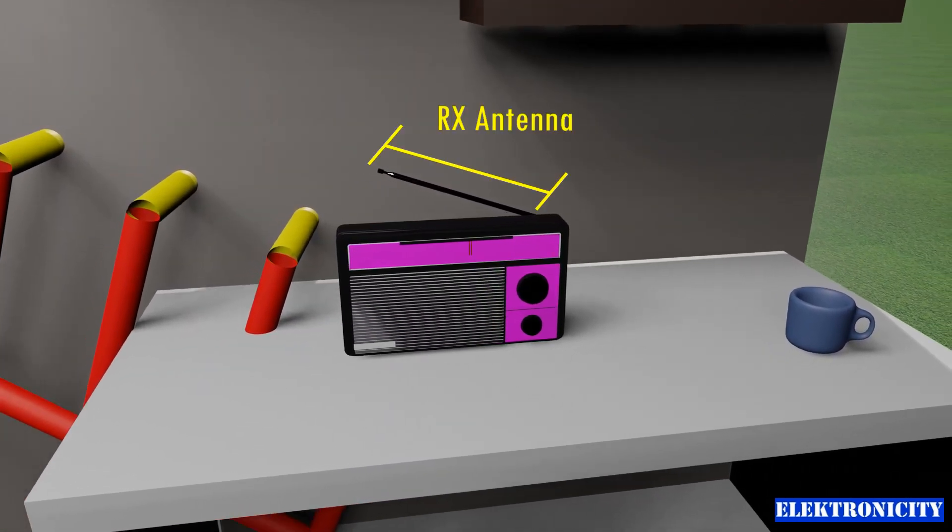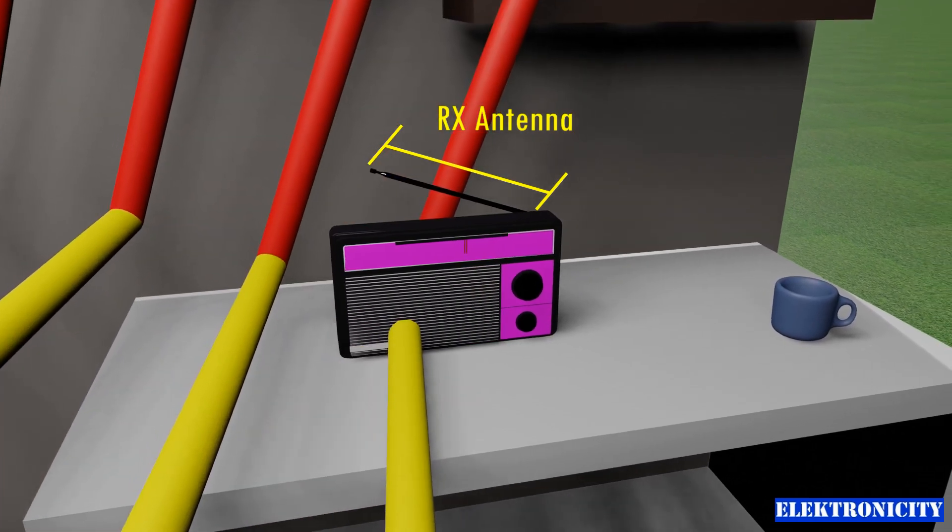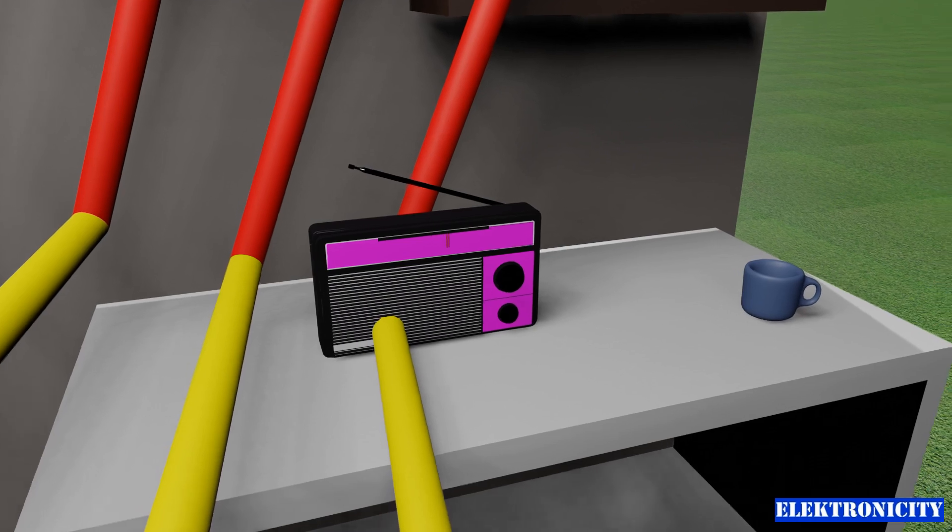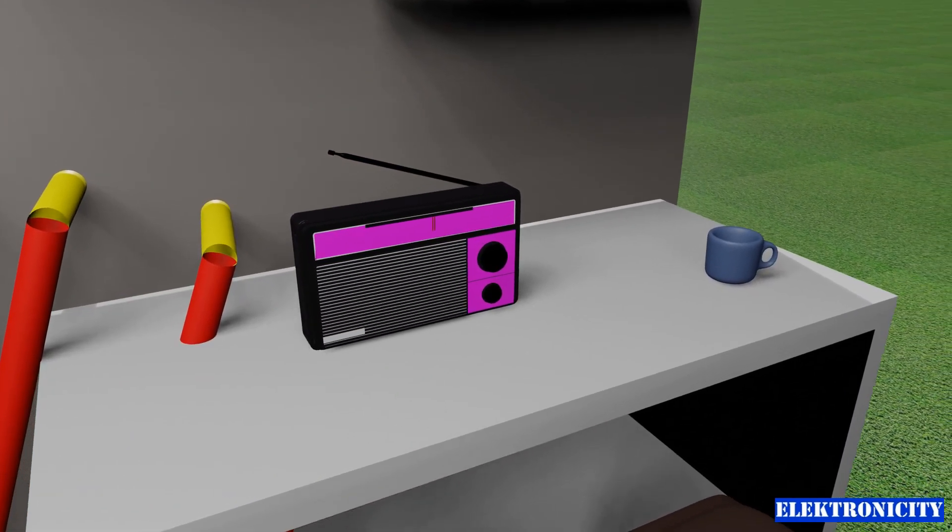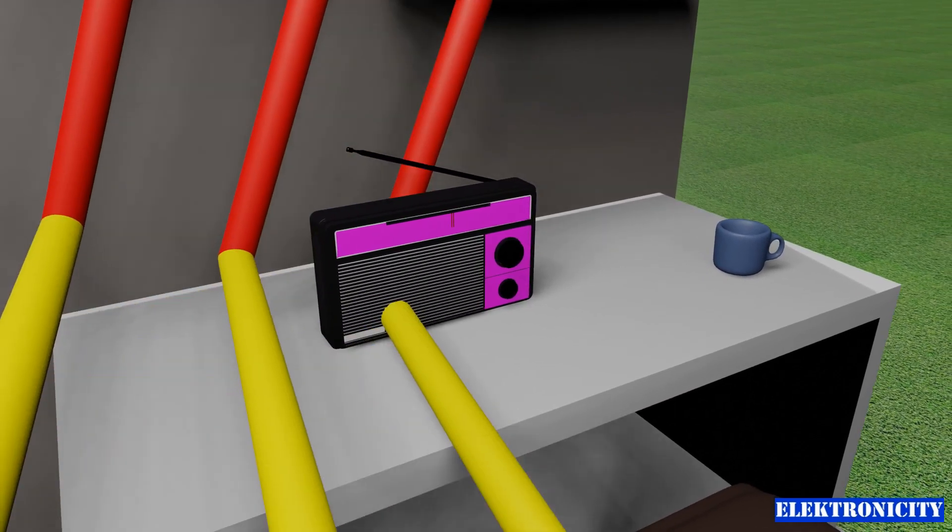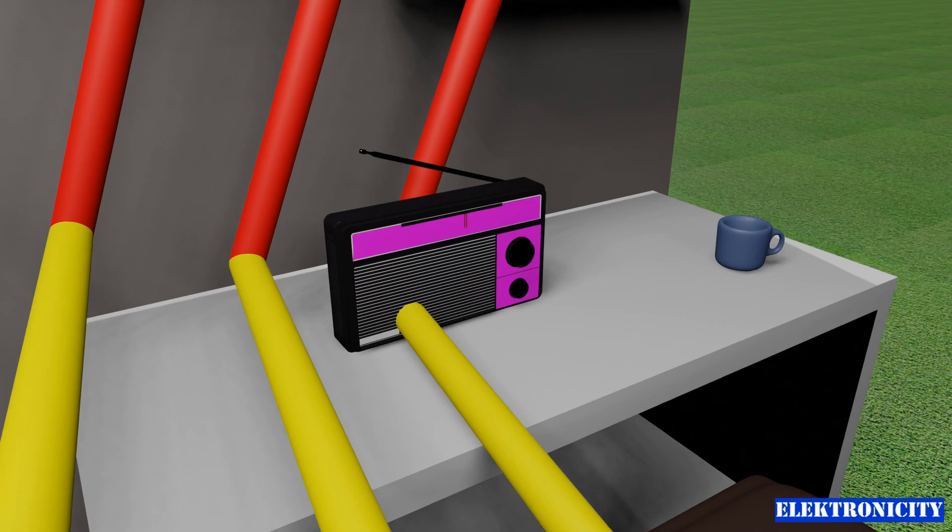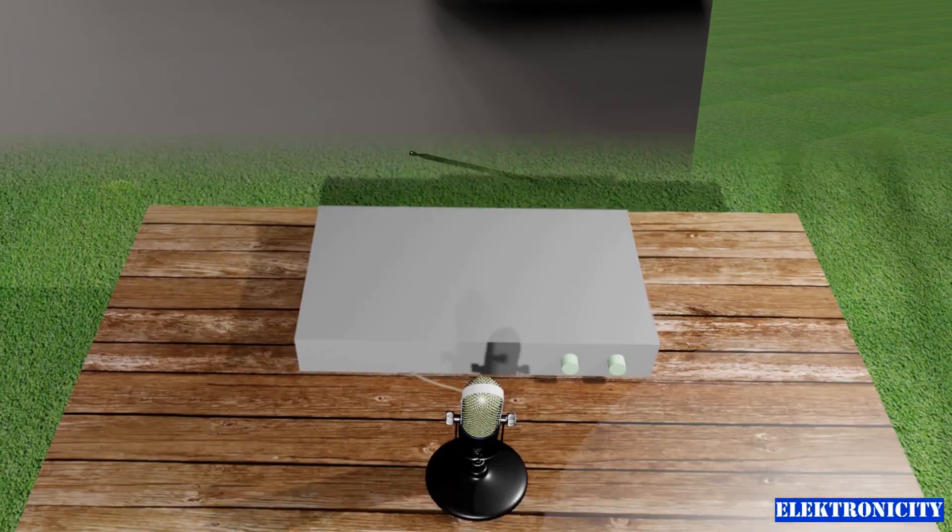The receiver antenna is generally much smaller than the transmitting antenna due to practical size constraints. While the small antenna reduces the reception efficiency compared to ideal quarter wavelength antenna size, it still allows for acceptable audio reception.